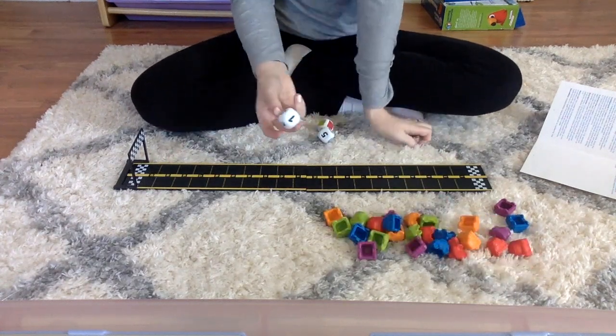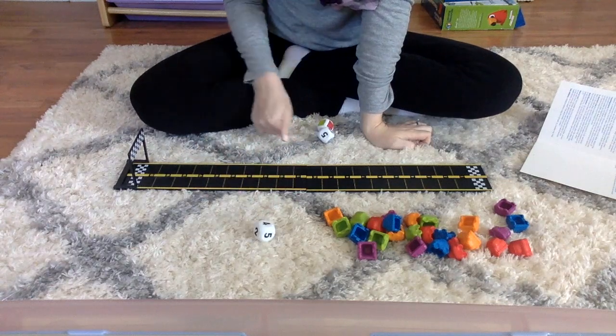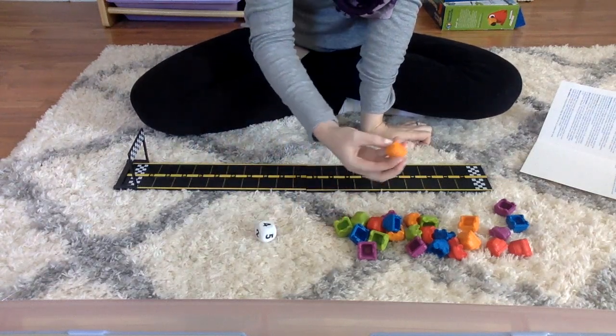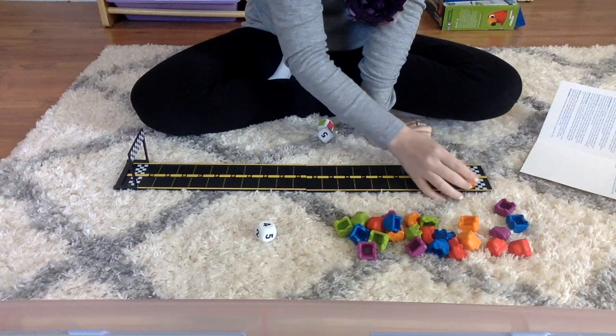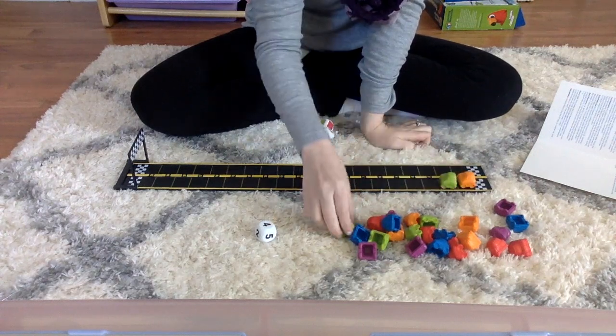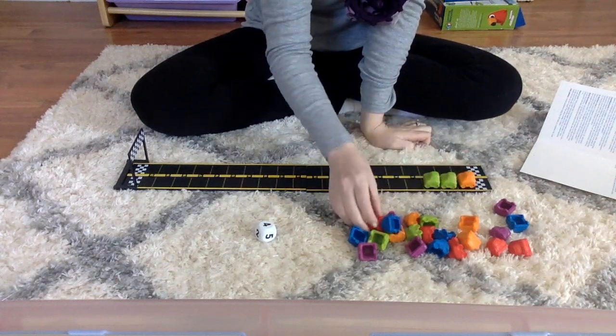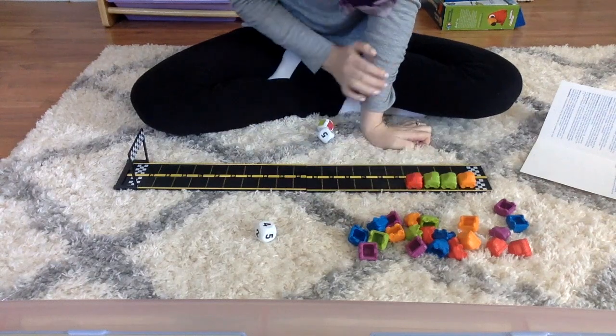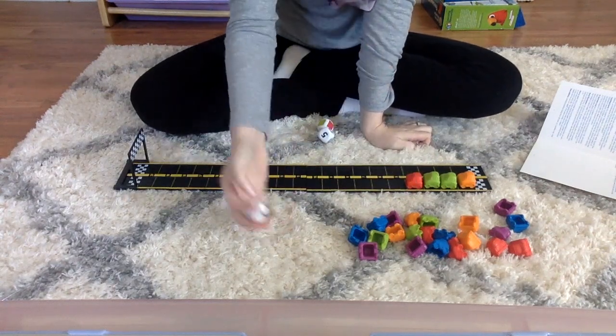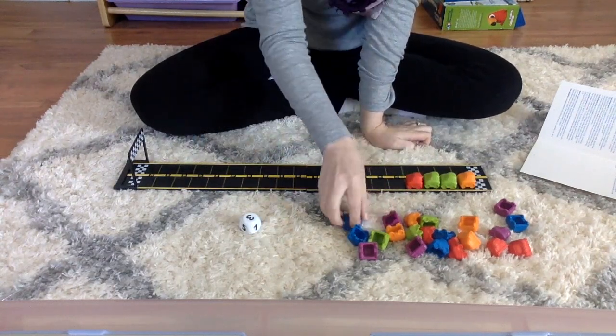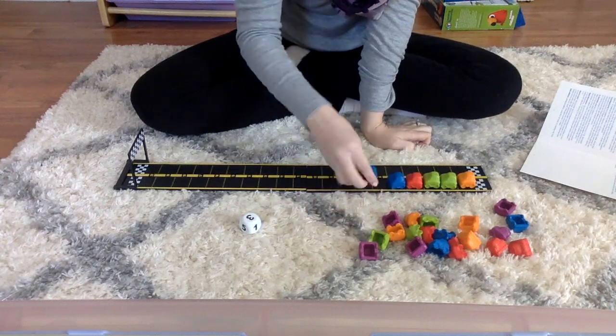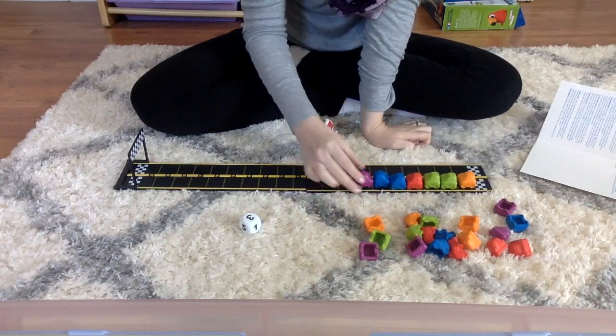For example, the child can roll one number die and if they get four, they line up four cars (one, two, three, four) on the racetrack. Then they roll again—I got three—and keep going until they reach the finish line.